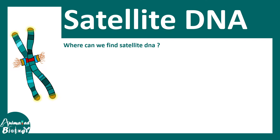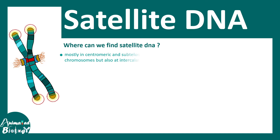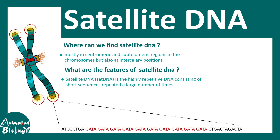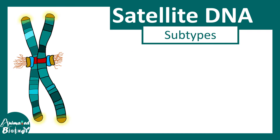Where can we find satellite DNA in our genome or in the chromosome? They can be found in different regions — for example, telomeres and centromeres — but they could also be interspersed throughout the chromosome. The key features of satellite DNA are that they are highly repetitive, tandemly repeated, and form arrays of repeats in the genome, and overall they are AT-rich.